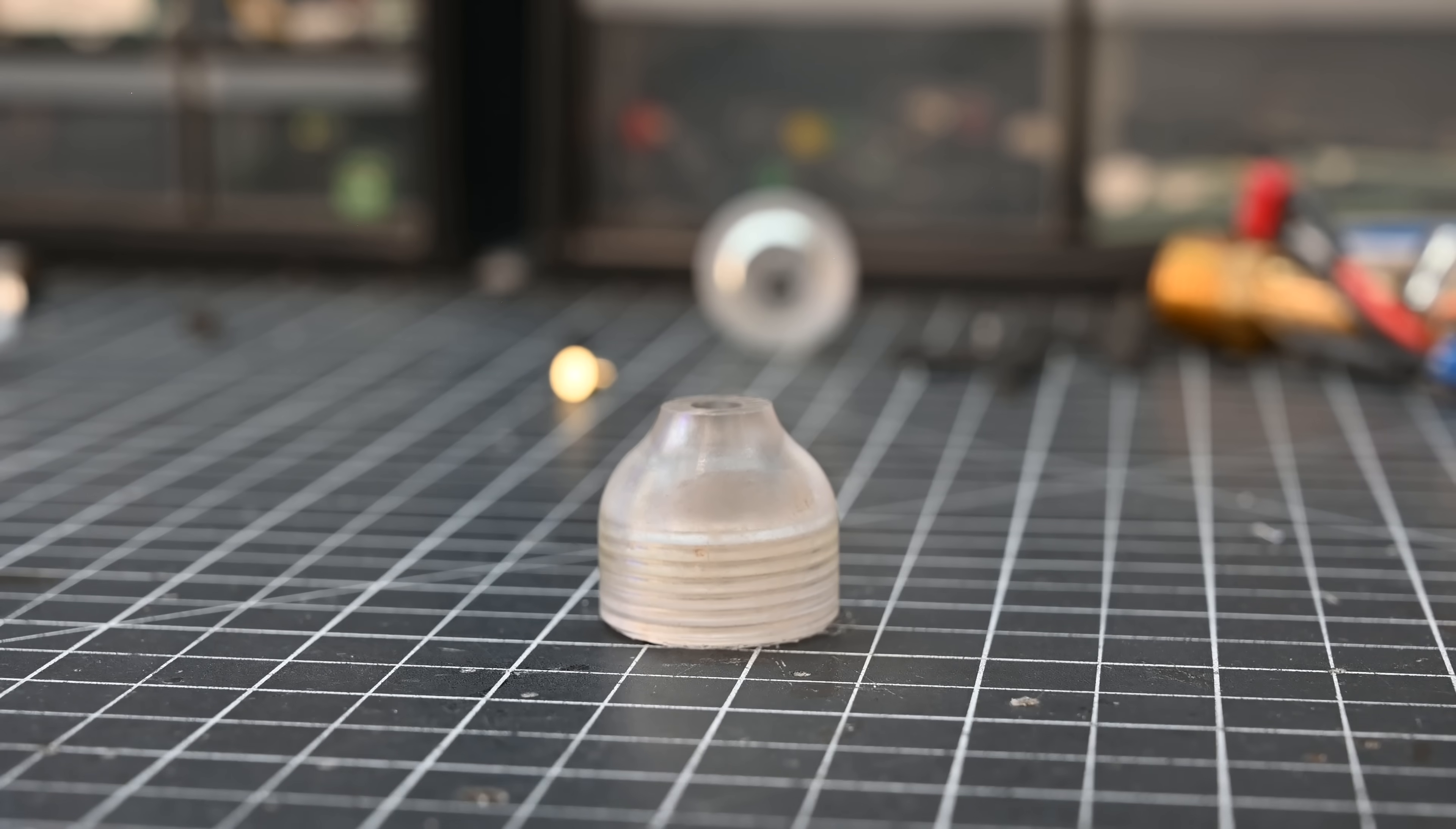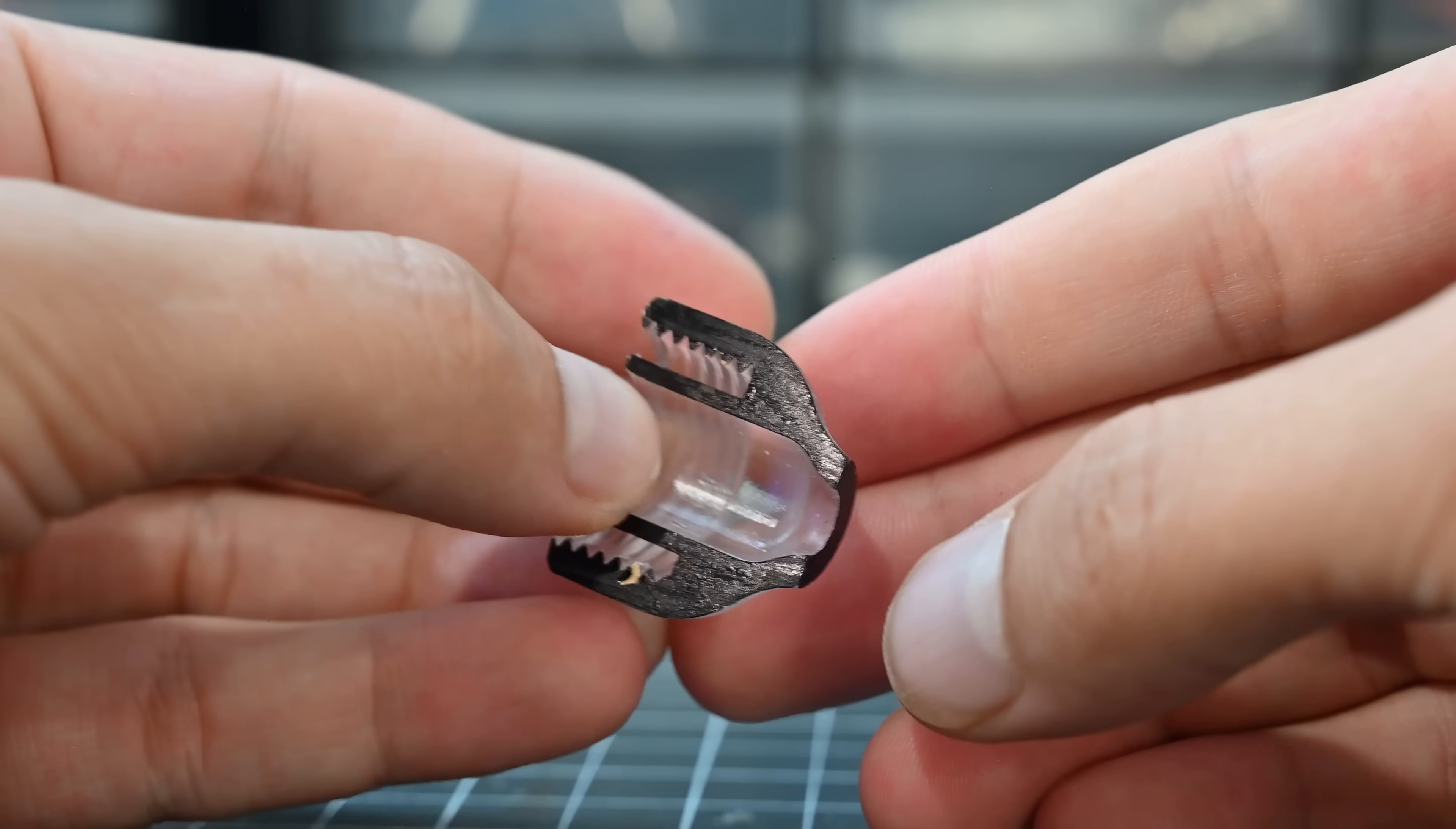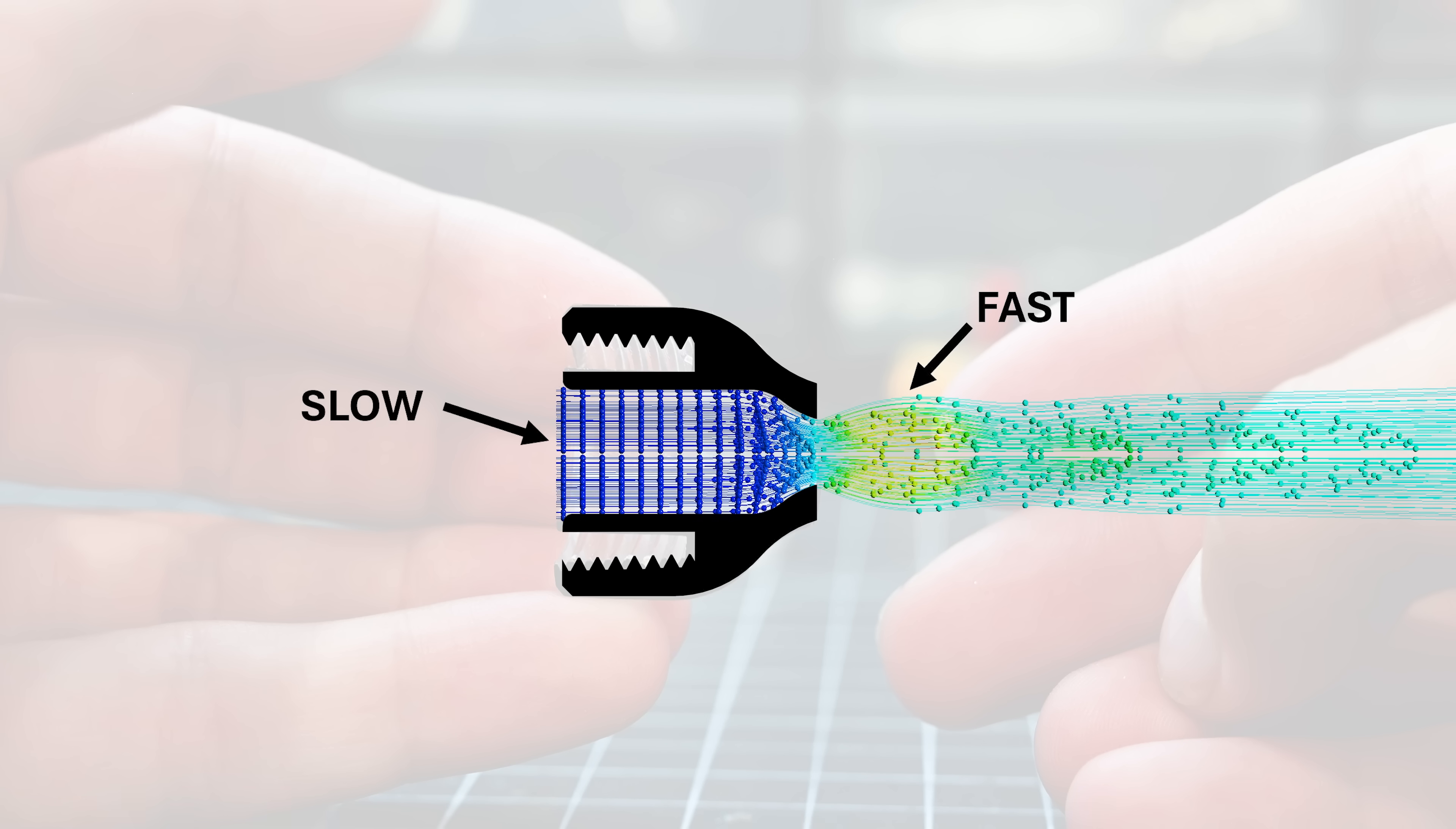This is a converging nozzle. To make it easier to see, I printed this cross-section. As the flow enters the nozzle at high pressure, it's forced to flow through a smaller exit area. This is called the throat of the nozzle, and as you can imagine, forcing all that flow through a smaller area means the flow has to speed up. But how fast will it get?